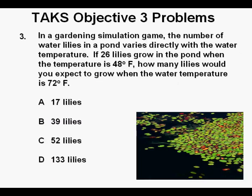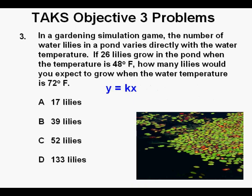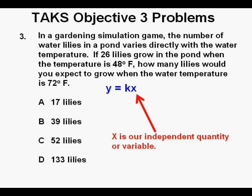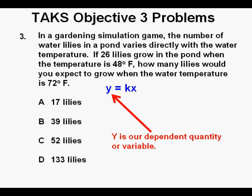Problem 3. In a gardening simulation game, the number of water lilies in a pond varies directly with the water temperature. If 26 lilies grow in the pond when the temperature is 48 degrees Fahrenheit, how many lilies would you expect to grow when the water temperature is 72 degrees Fahrenheit? Here we have a simulation problem where the number of lilies in a pond varies directly with the water temperature. We should know that the equation for direct variation is y = kx. x is our independent quantity or variable, k is our constant of variation, and y is our output or dependent quantity or variable.